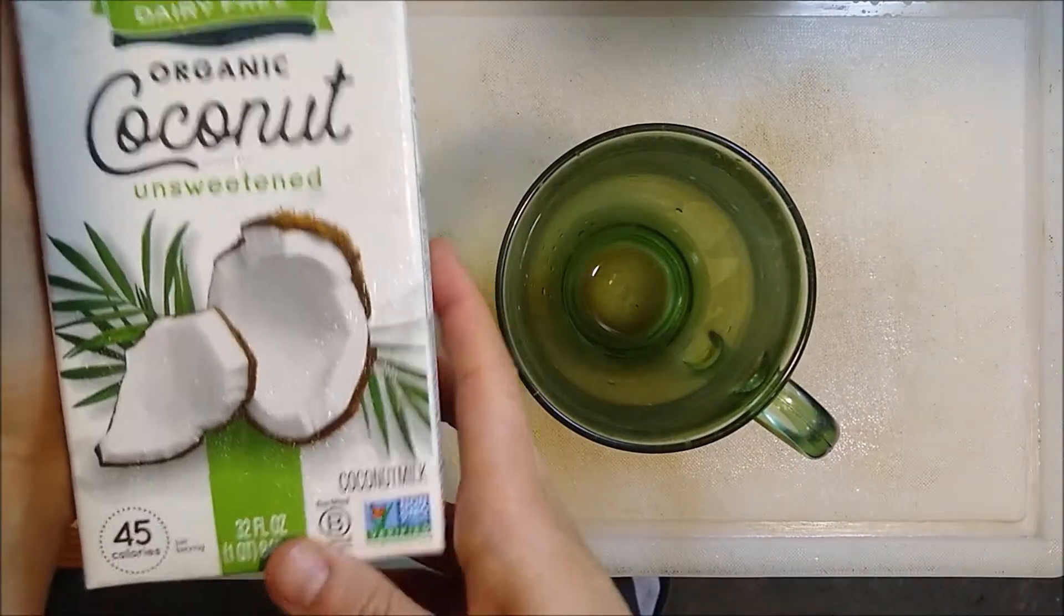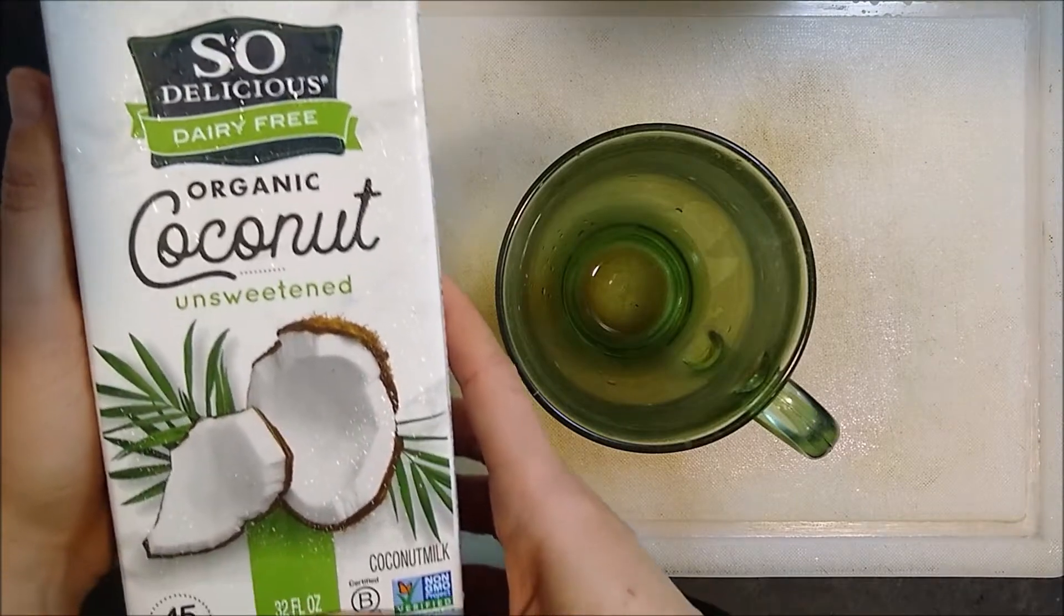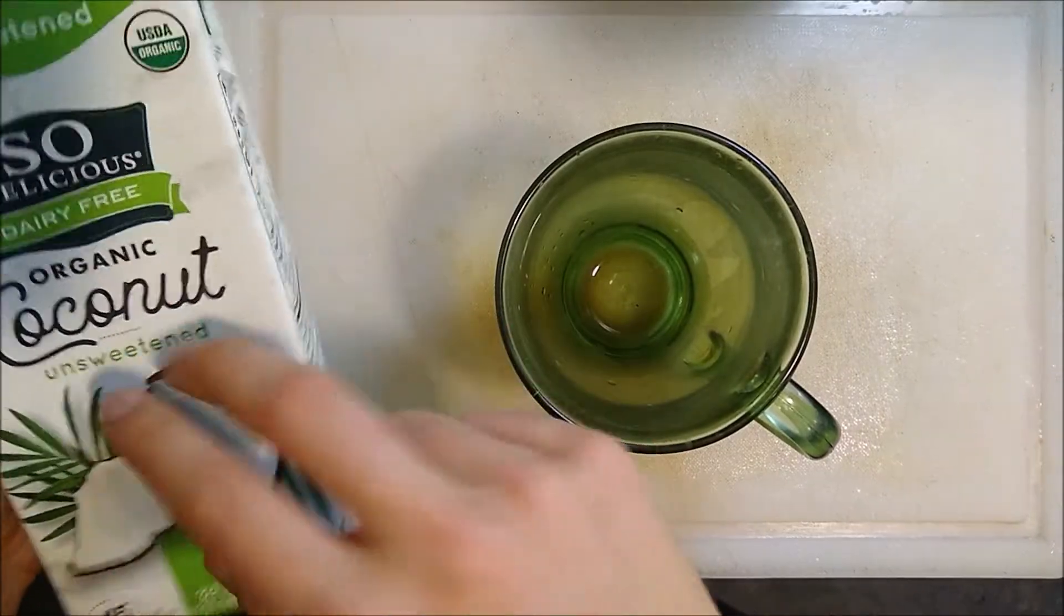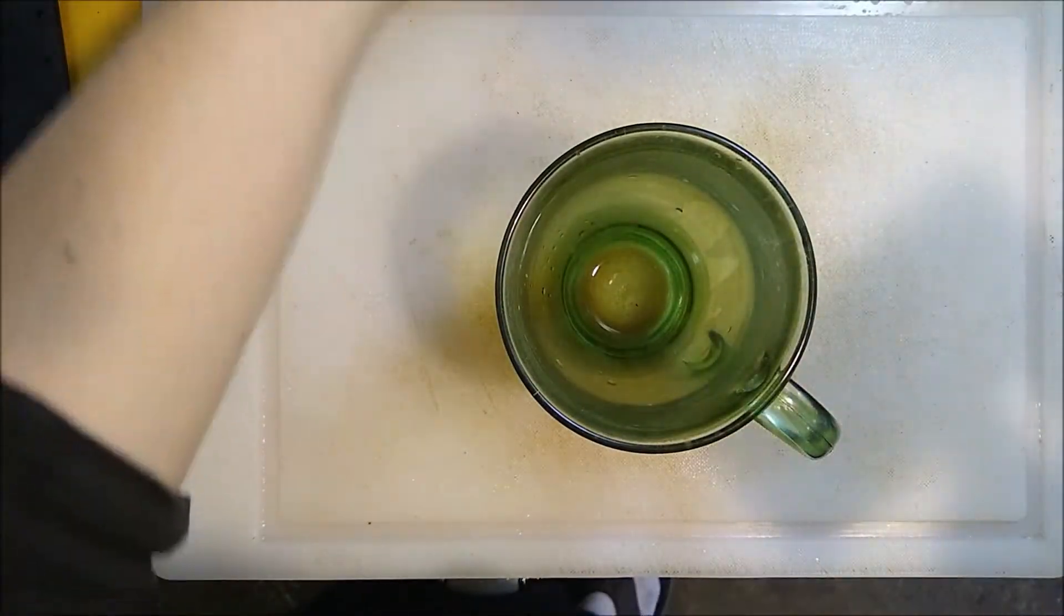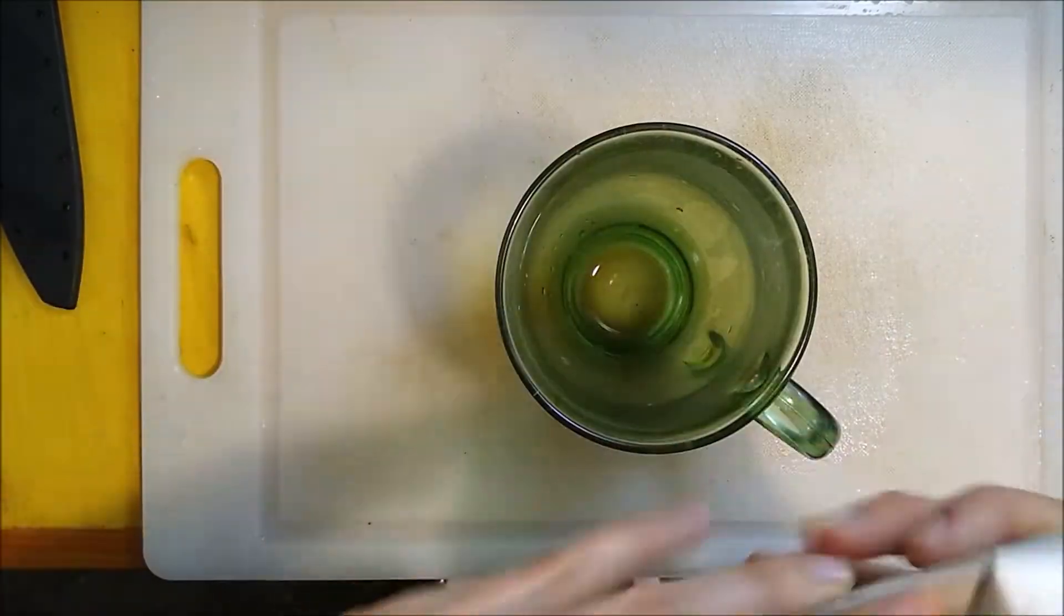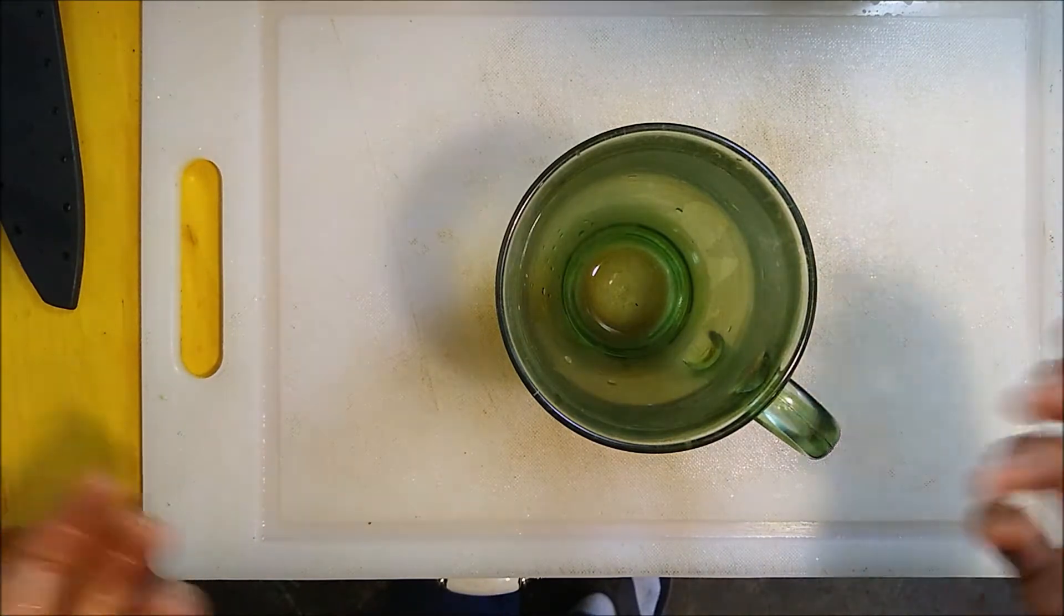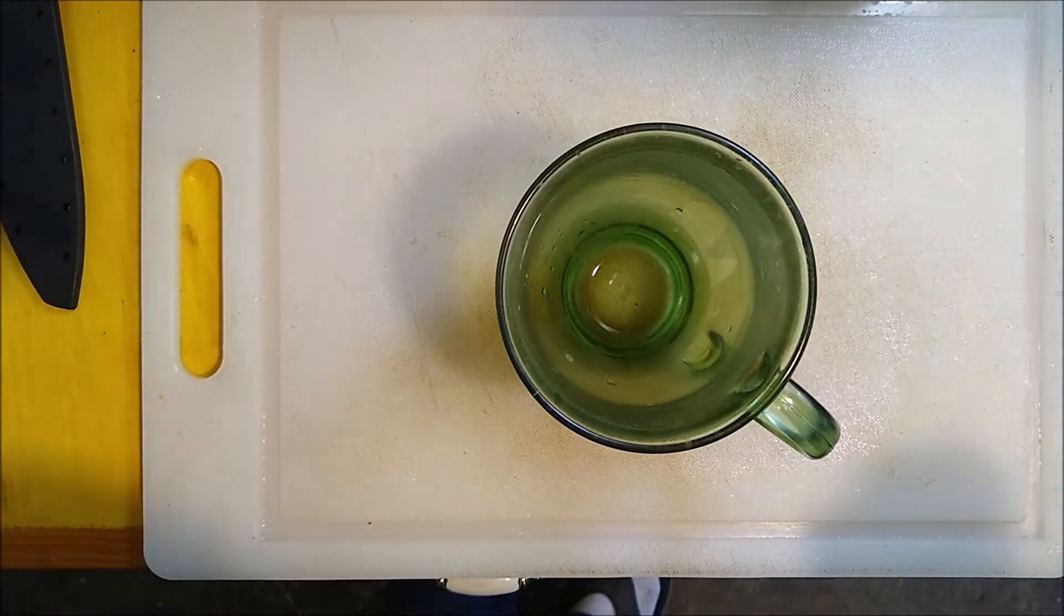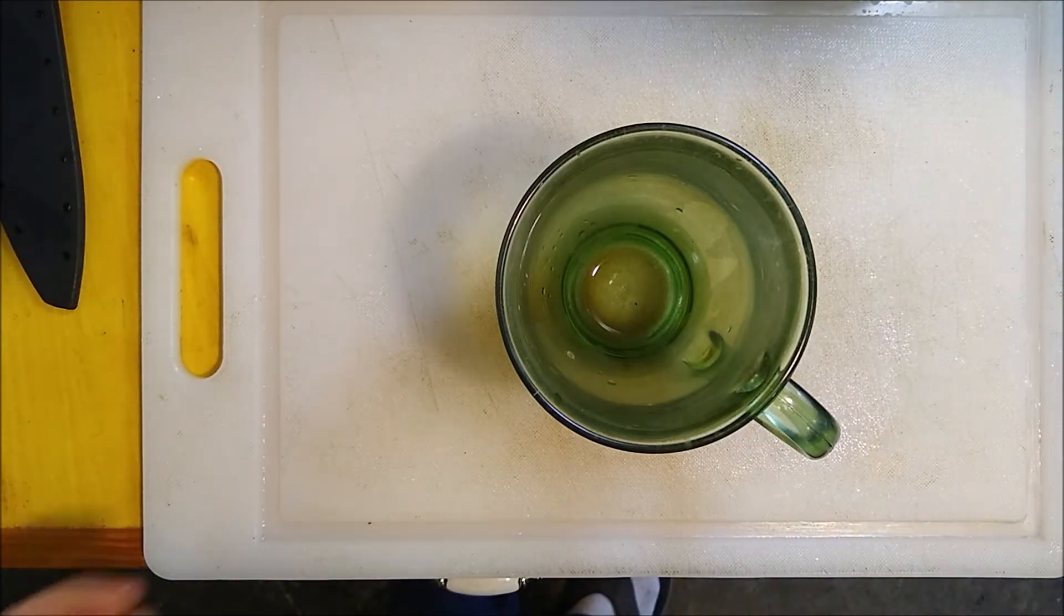Start with your favorite brand of milk. I'm going to use some unsweetened regular coconut milk, but you can use a lot of different things. Here's some French vanilla almond creamer. You can use soy milk, coconut milk, regular cow milk, whatever you've got on hand, whatever you like.